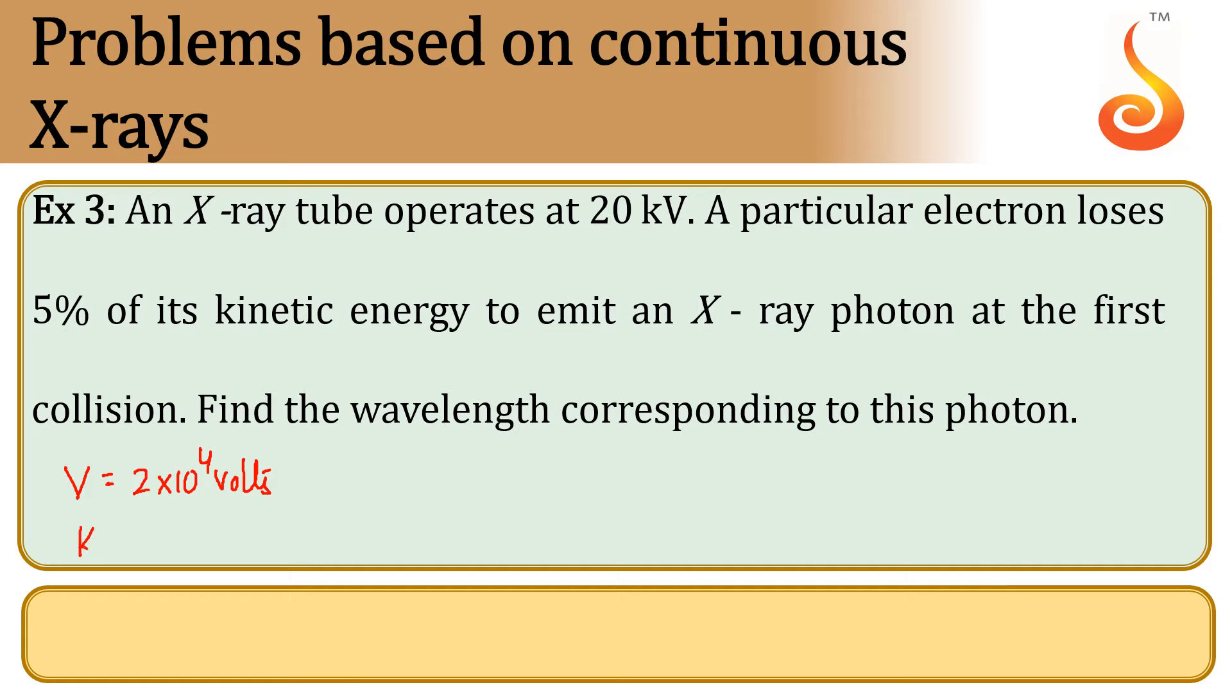And the kinetic energy of the electron will be eV, which is equal to 1.6 × 10^-19 into 2 × 10^4, which gives us 3.2 × 10^-15 joules.